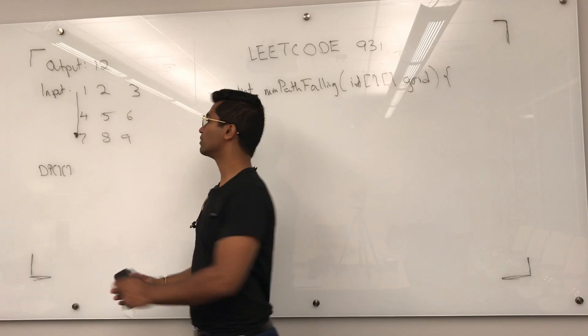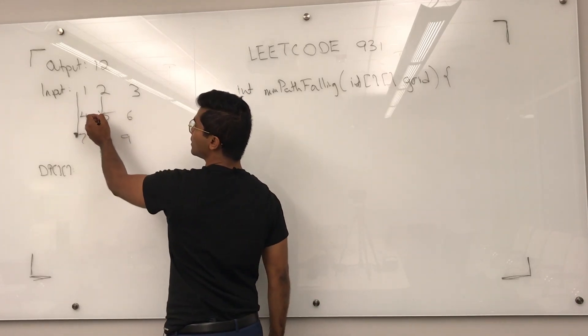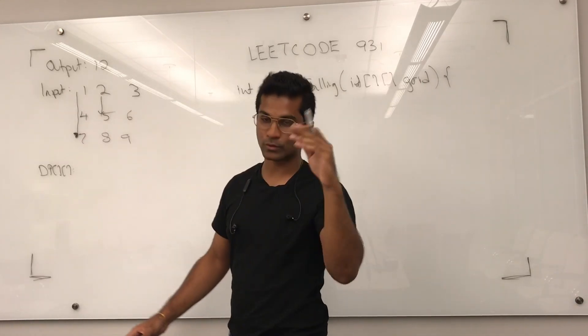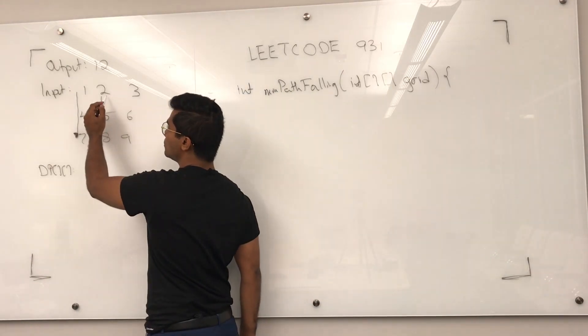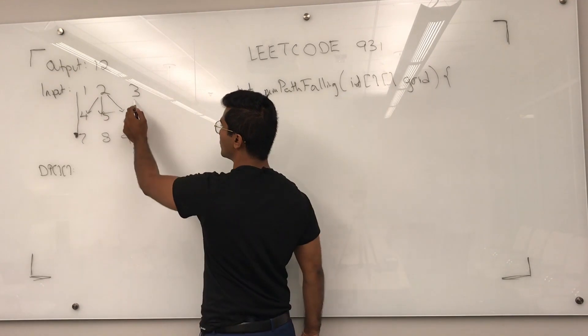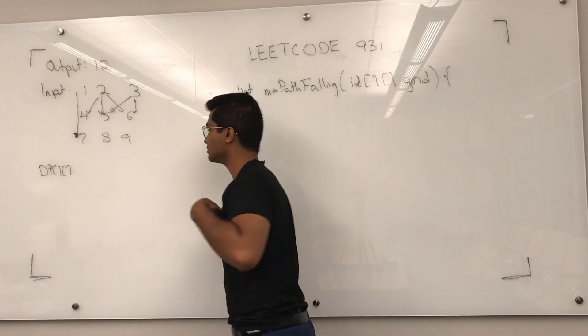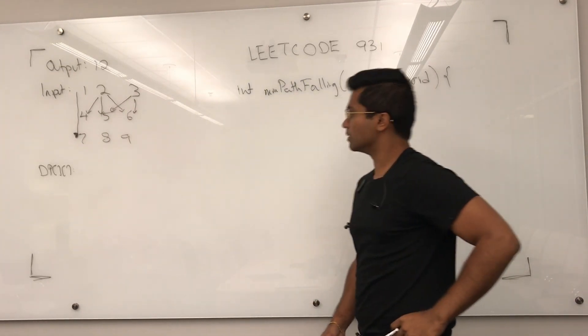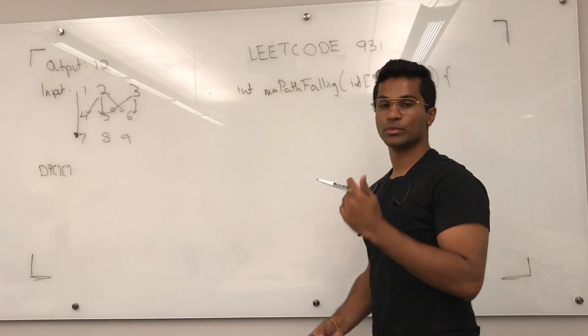And what we can do is go either straight down or left or right, at most one. So from two we can go to six or five or four, from three we can go to six or five. Of course we can't go out of bounds.